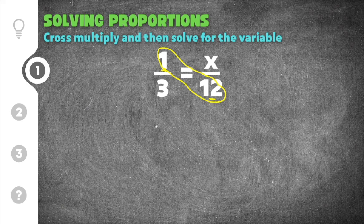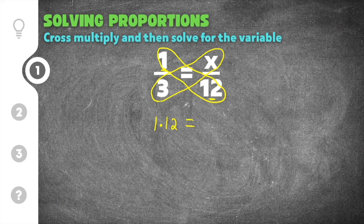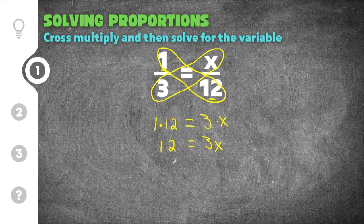I'm going to do 1 times 12 as the first part of our cross multiplication, and then do the same thing in reverse — take the denominator of the first ratio and multiply it times the numerator of the second. Then I'll do 3 times x. After we cross multiply we can start to simplify: 1 times 12 is 12, and that's equal to 3 times x. 3 times x is just 3x. Now we need to solve for x.